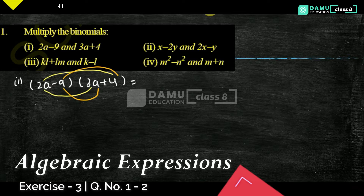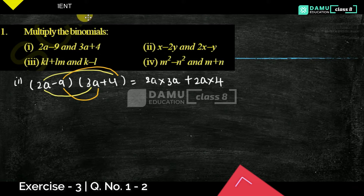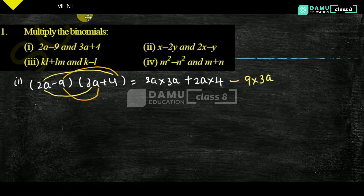So here: 2a into 3a, then second, plus 2a into 4. And the next one is: minus 9 into 3a, then minus into plus will become minus 9 into 4.